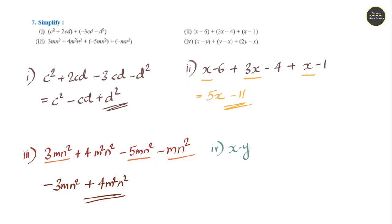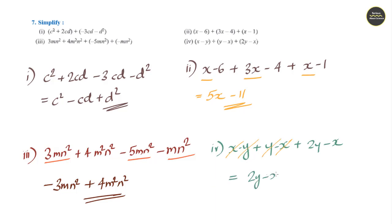Question 4: x minus y plus y minus x plus 2y minus x. The x terms cancel and minus y and y cancel. Remaining term is 2y minus x.